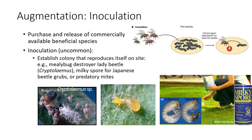Two approaches used in augmentation are inoculative releases and inundative releases. In inoculative programs, released natural enemies reproduce in the field and build up their population so that their progeny provide control for several generations. Inoculative releases may be used to build up populations of natural enemies earlier in the season than usual or to establish a natural enemy in an area where it was not previously present. Inoculative releases are appropriate when the population of an otherwise effective natural enemy is severely devastated by pesticide applications, unfavorable weather conditions, cultivation practices, or a lack of seasonal hosts.